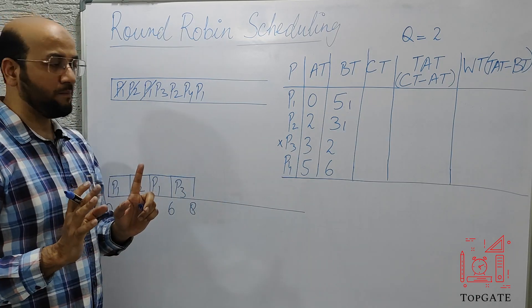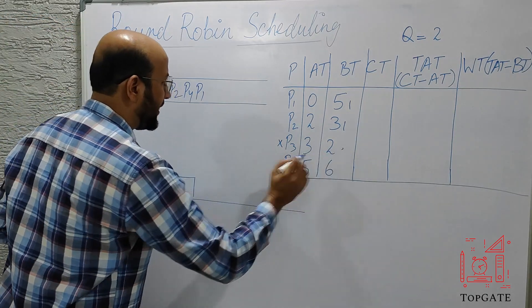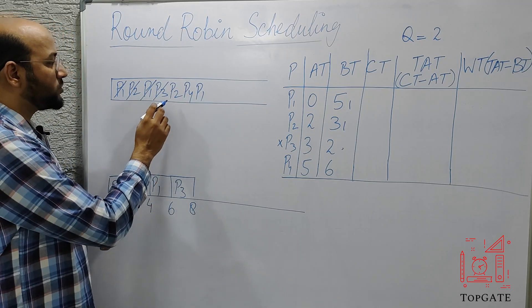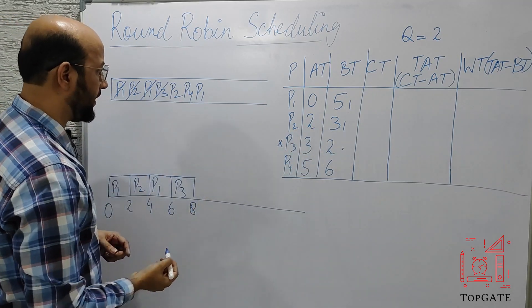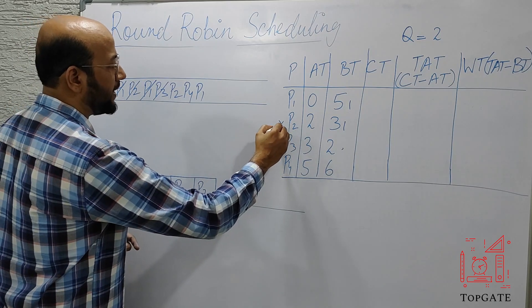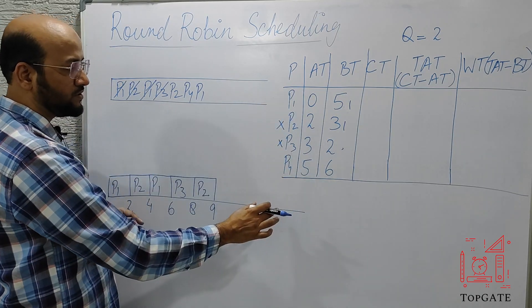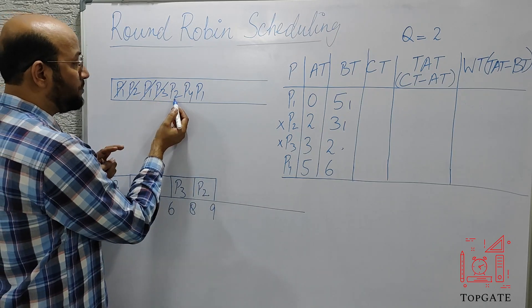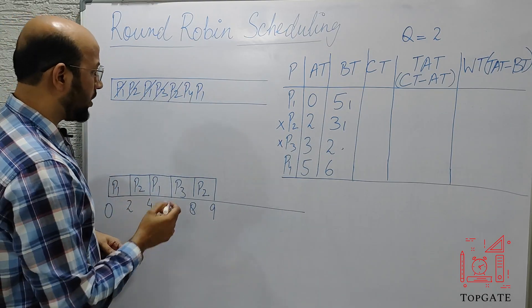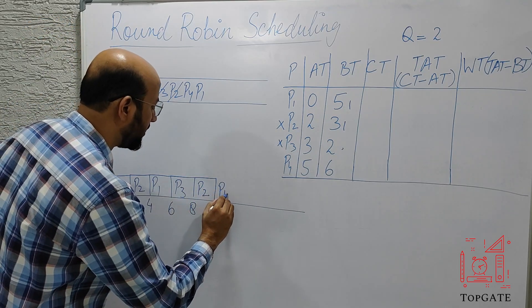At time 8, no new processes arrive. P3 has completed, so it is removed from the queue. Next is P2, which has 1 unit left. P2 executes from time 8 to time 9 and terminates. At time 9, no new processes arrive, and P2 has completed, so it is removed from the queue.